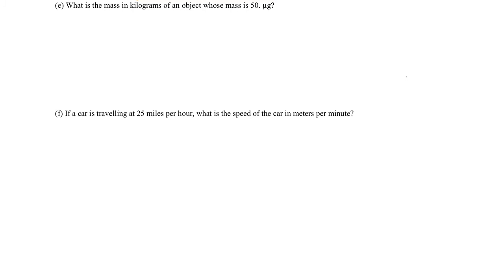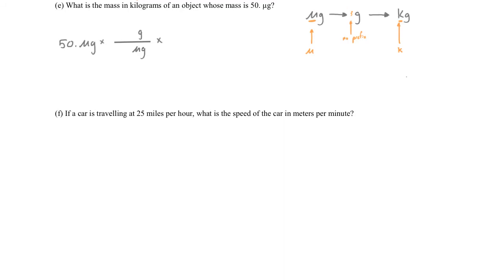What is the mass in kilograms of an object whose mass is 50 micrograms? We'll stay within the metric system using the metric prefixes. Rather than combining two metric prefixes in one conversion factor, I prefer going from one metric prefix to the base unit and then to the second metric prefix. So we go from micrograms to grams, then from grams to kilograms. We start with 50 micrograms, the first conversion factor transforms micrograms into grams — micrograms on the bottom and grams at the top — and the second converts grams into kilograms.